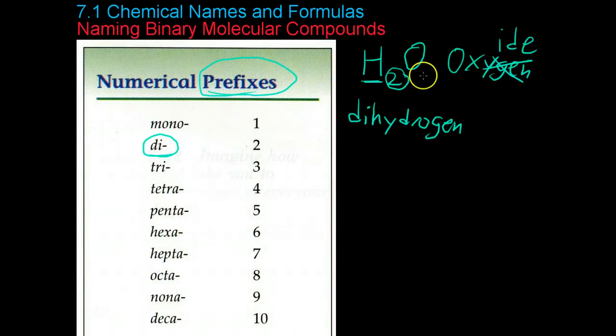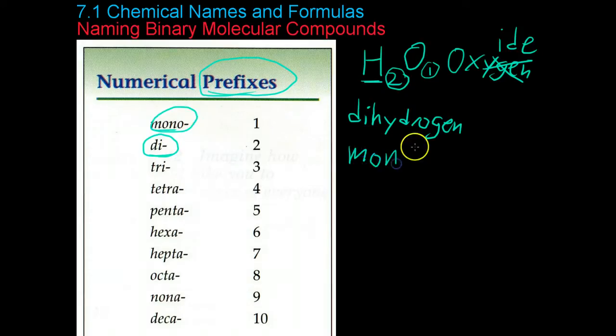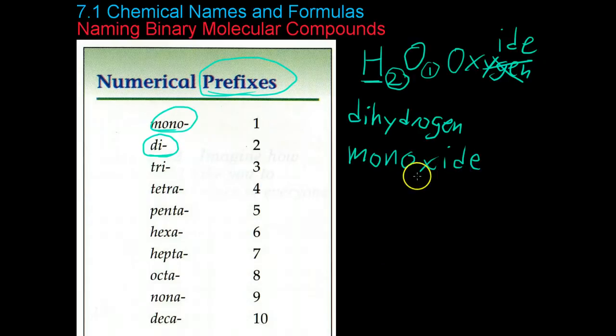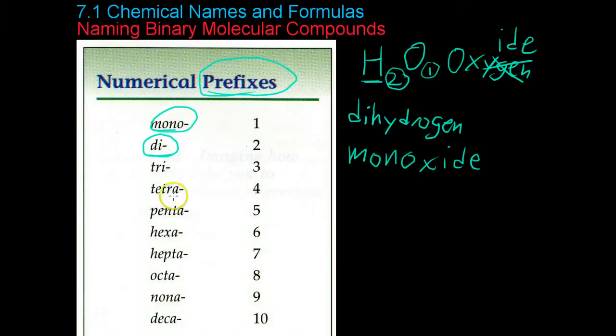Now, then you go over and you find the prefix for the number. In this case, for oxygen there's only one. So you use the prefix mono, in which case you write dihydrogen monoxide. Now, you'll notice I wrote monoxide instead of mono-oxide, and this is because when one of the words starts with a vowel, you usually drop the vowel that's on the end of one of these prefixes.